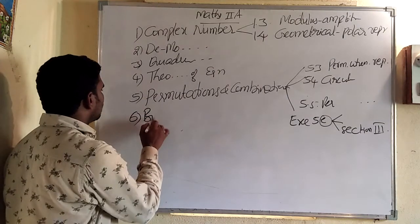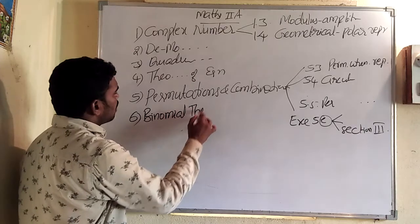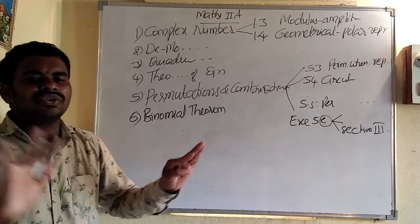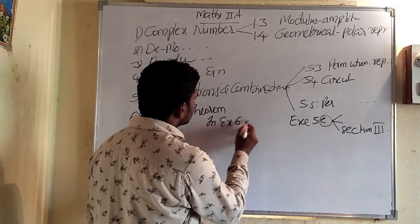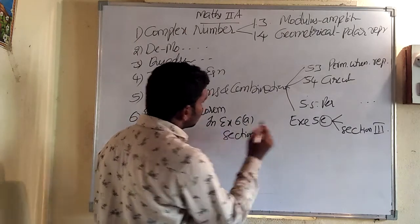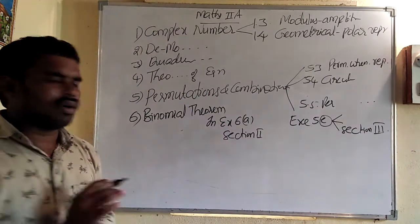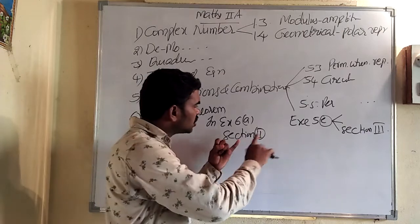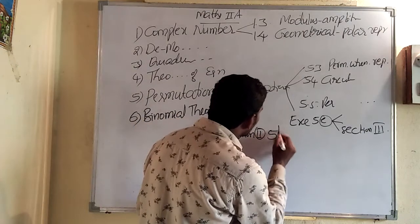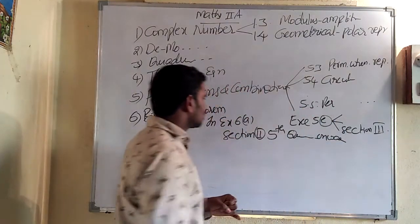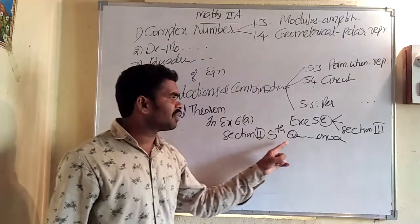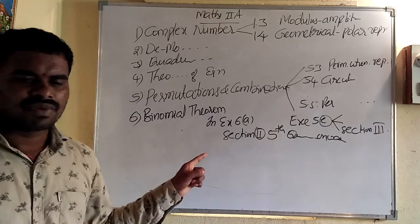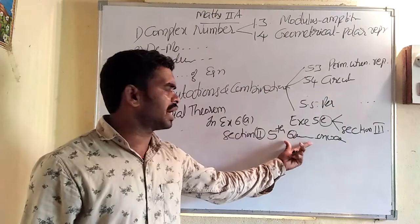The sixth chapter is Binomial Theorem. In this binomial theorem also, a few subtopics are removed. In exercise 6E, section 2 is removed. So in exercise 6E section 2, from 5th question onwards, removed for this academic year. In exercise 6A also, examples related to this kind of exercise are removed.